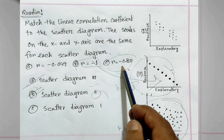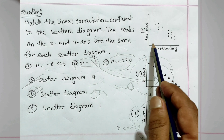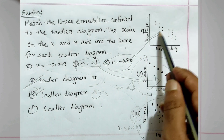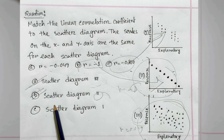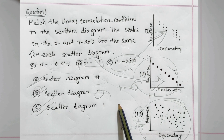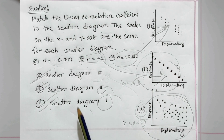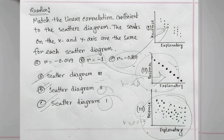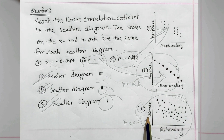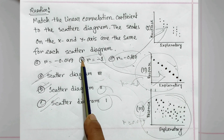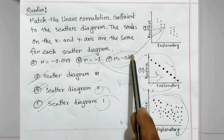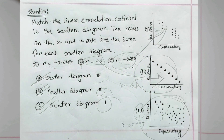For scatter diagram C, r is equal to minus 0.810. So scatter diagram C is equal to one. To summarize: correlation coefficient A corresponds to graph three, and the correlation coefficients match accordingly.